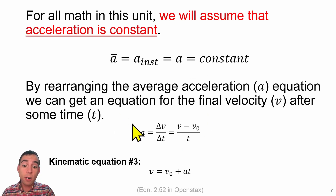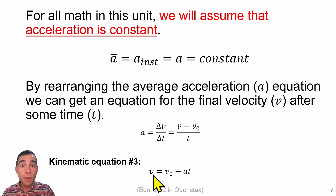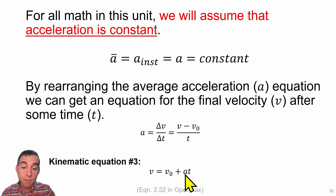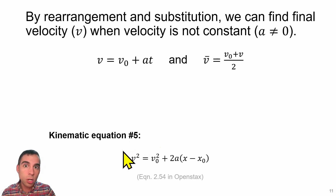This lets us simplify our equation for acceleration, which says delta V over delta T. If we mathematically rearrange this, we get a very useful kinematic equation that tells us the velocity of an object after some amount of time given its acceleration and its initial velocity. Here's another useful kinematic equation that we might end up using depending on which variables you are given.